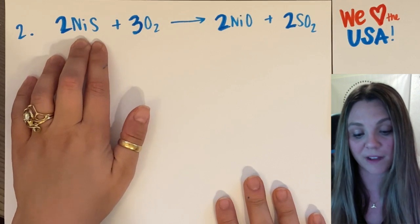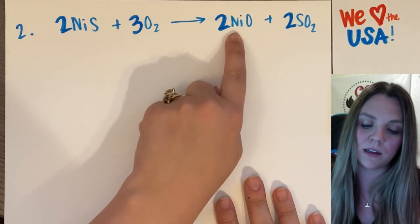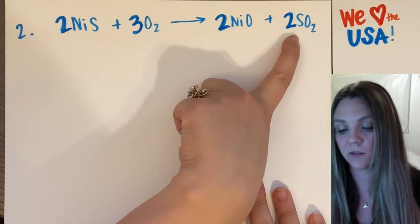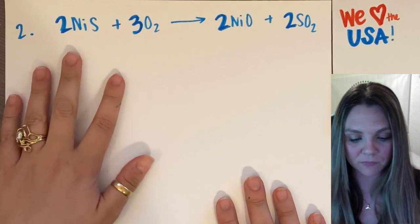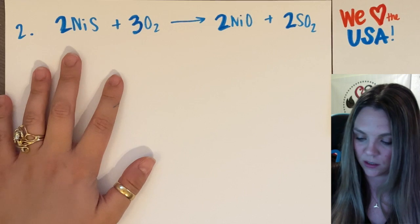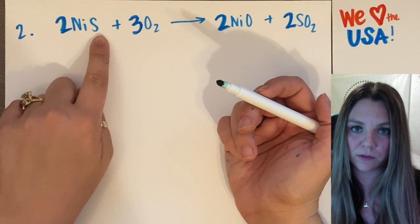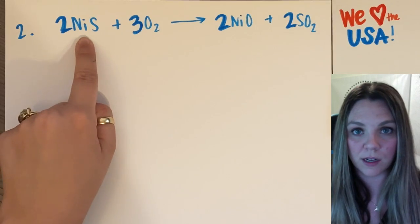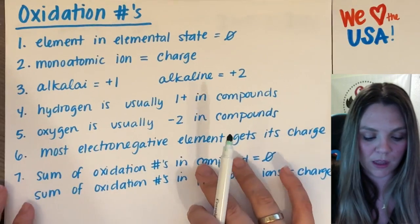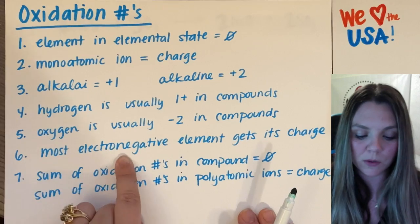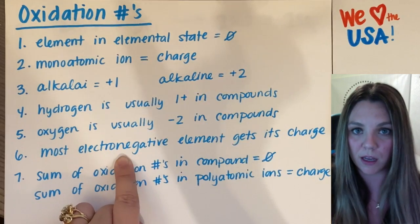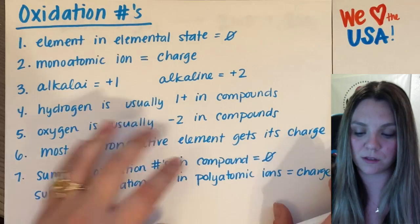Nickel two sulfide plus oxygen reacts to make nickel two oxide plus sulfur dioxide. Let's assign some numbers. This one is rule six. The most electronegative element of that compound gets its charge.